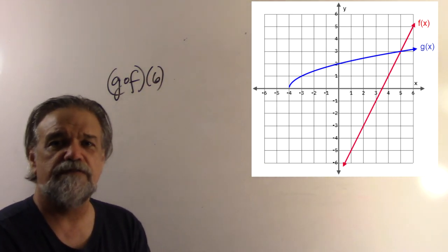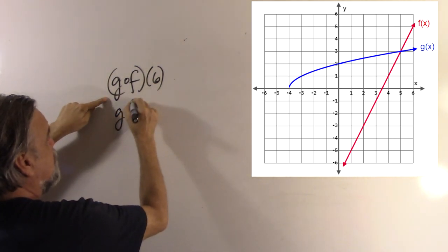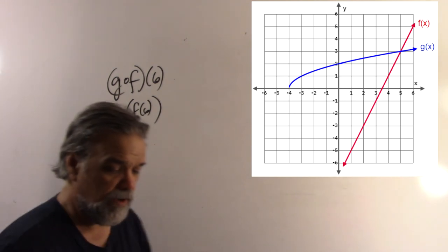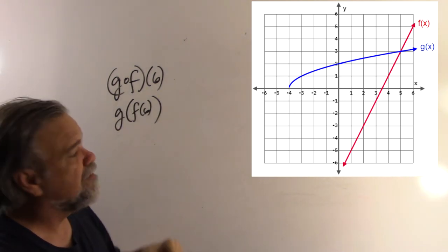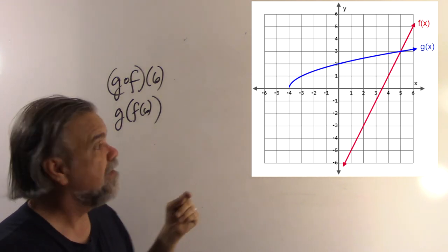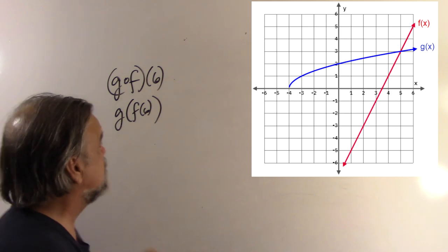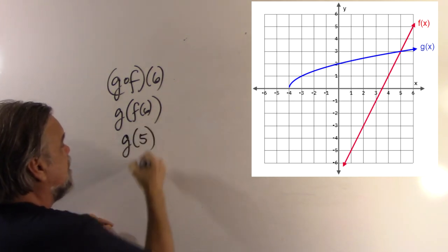Now, if I want g(f(6)), remember that means g of f of 6. Well, what's f(6)? If I look at the function, the red function there, I see that it passes through the point (6, 5). So, that means f(6) is going to be 5. So, this is just g(5).